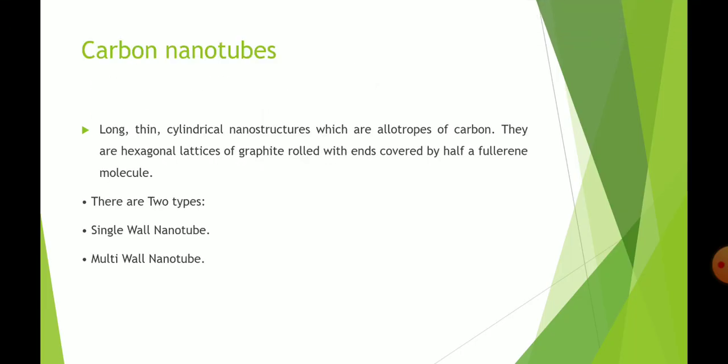Carbon nanotubes are long thin cylindrical nanostructures which are allotropes of carbon. They are hexagonal lattices of graphite rolled with ends covered by half a fullerene molecule. There are two types: single wall nanotube and multi wall nanotube.